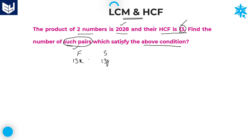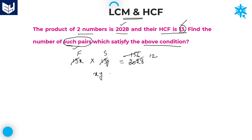That is the reason why I will take the first number as 13x and the second number as 13y. Now, one more condition is the product of two numbers is 2028. So 13x multiplied by 13y equals 2028. You can cancel using the 13 times table: 13 ones, 13 fives (65), 13 sixes. Again cancel with 13 — 13 twelves. Now x times y is equal to 12.